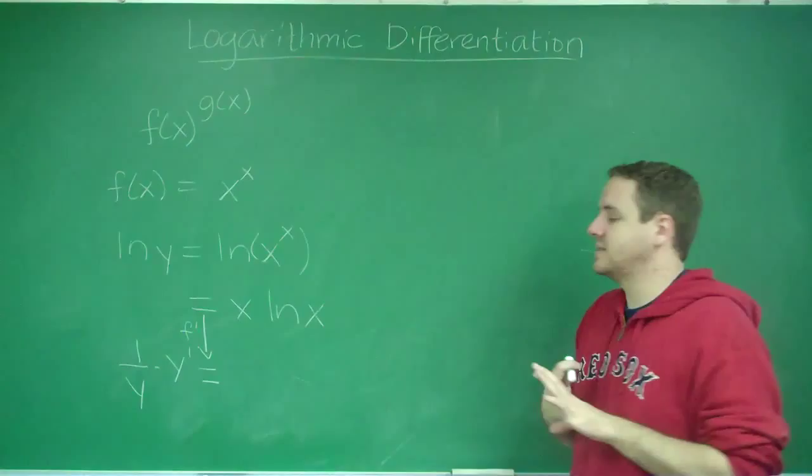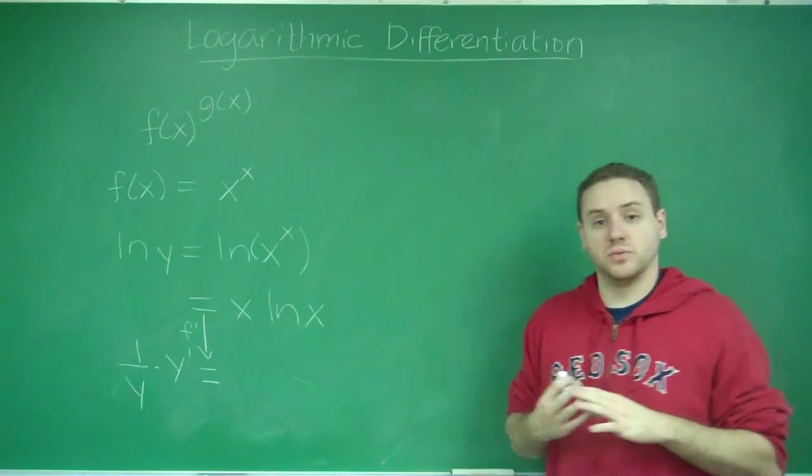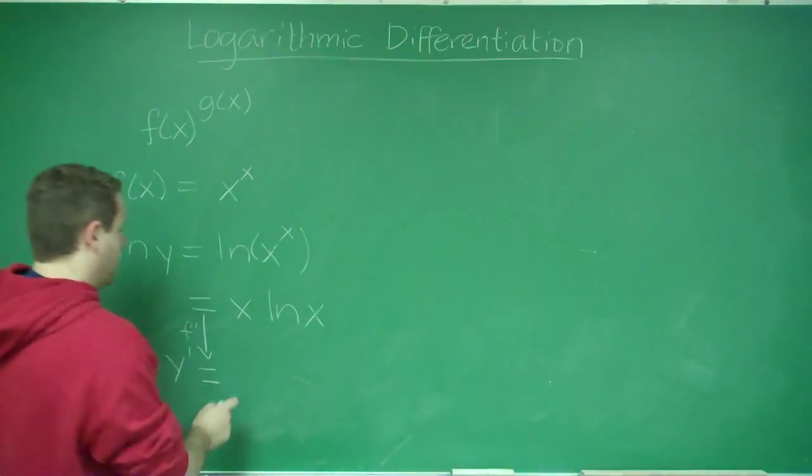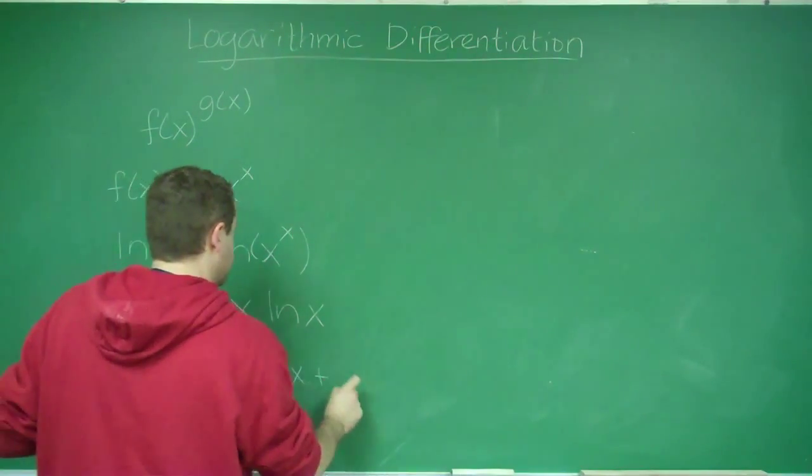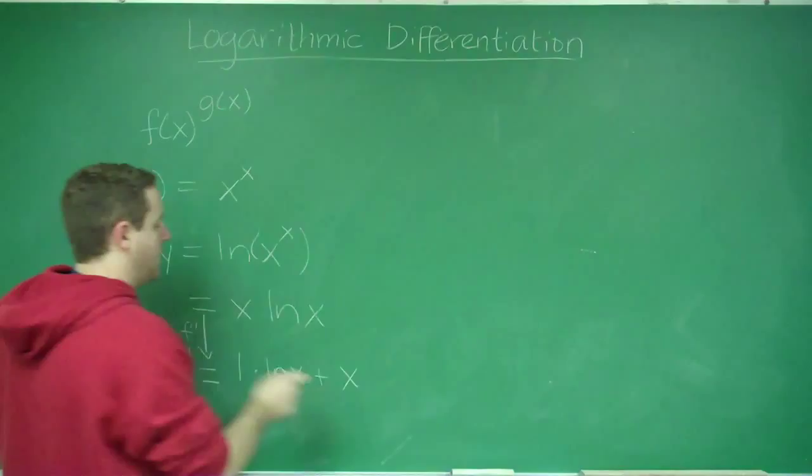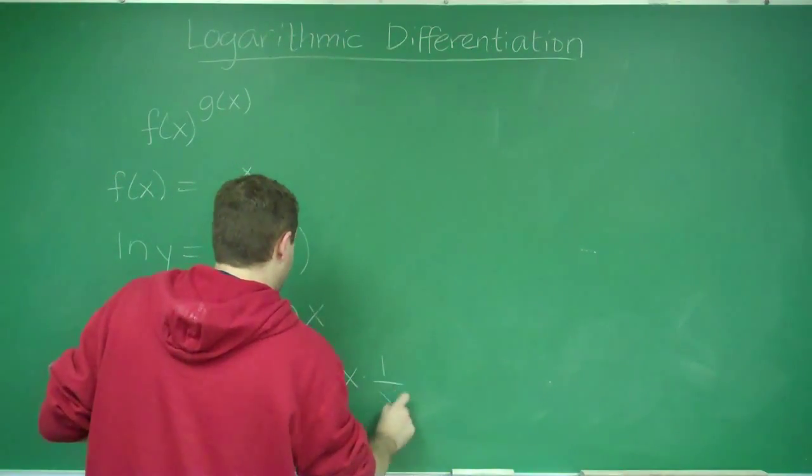Here, to do the derivative of x ln x, we just need to do the product rule. So we would get 1 times ln x plus x times the derivative of ln x, which is 1 over x.